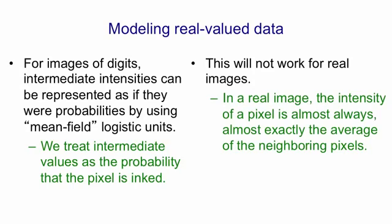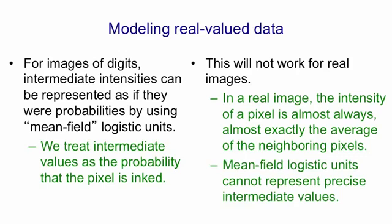And you can't achieve that with a logistic unit. Mean field logistic units are unable to represent things like the intensity is 0.69, but very unlikely to be 0.71 or 0.67. So we need some other kind of unit.